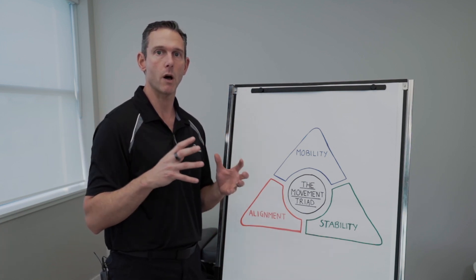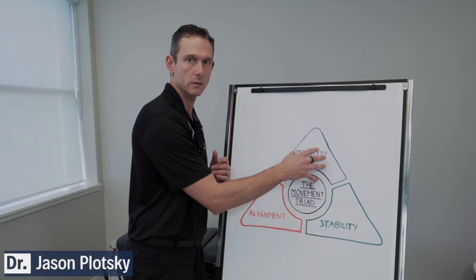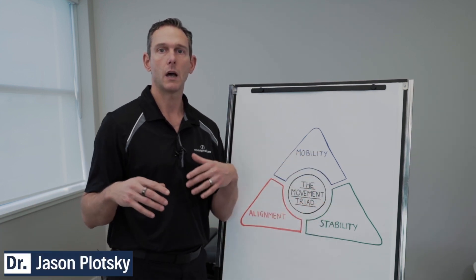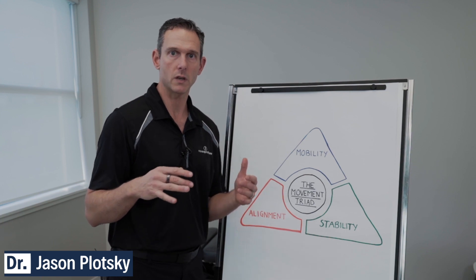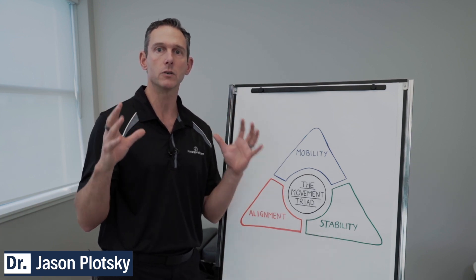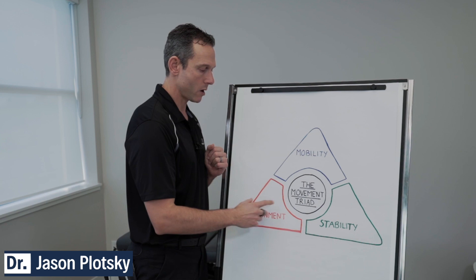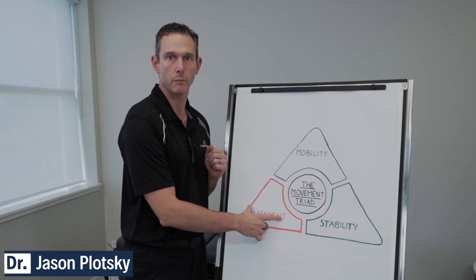Whenever I think about joints in the body, I always think about these three things. For example, if we used the spine as an example, we would say, to have an ideal spine, what would that mean? Well, we would want that spine in an ideal alignment pattern.